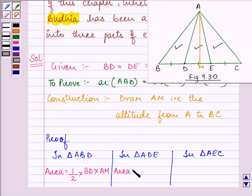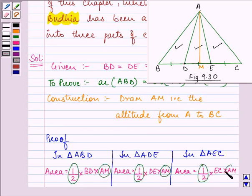Area is half into its base DE and altitude AM. And here also half into base into altitude. Now, you can see that in all the three cases we have half into AM common to each other. And the remaining parts are given to us as equal.